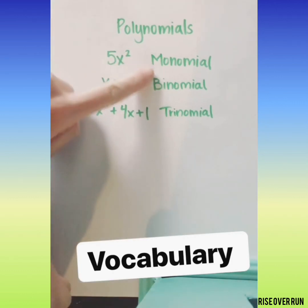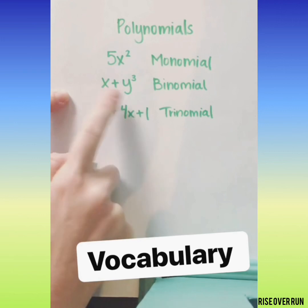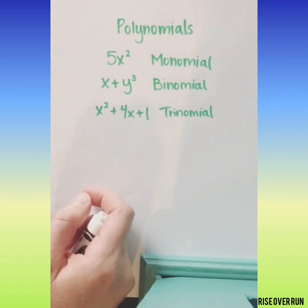First, let's talk about some vocabulary words. This is a monomial because it has one term. Binomials have two terms. Trinomials have three terms. You can call any of these polynomials.